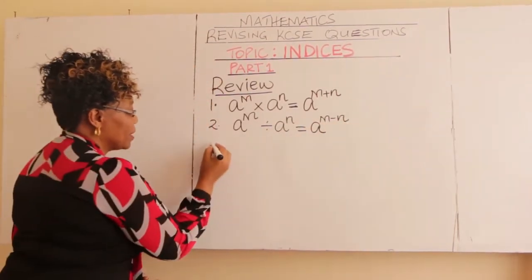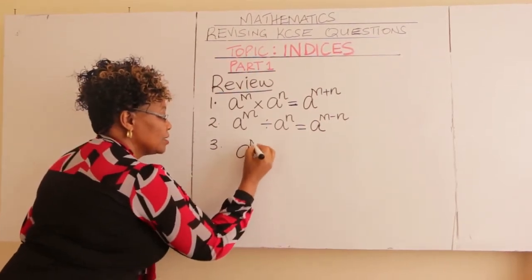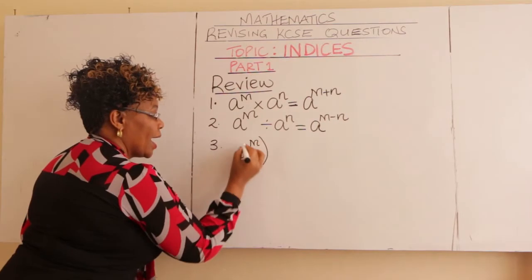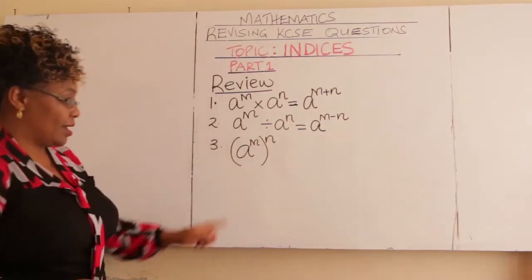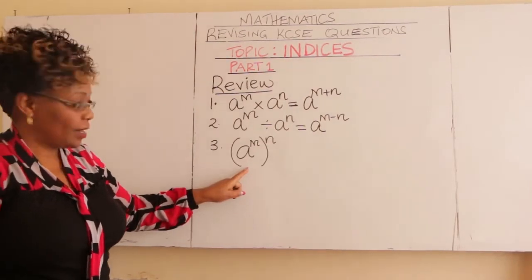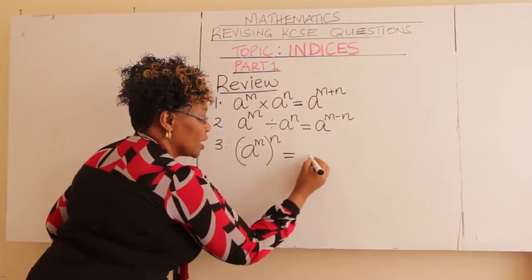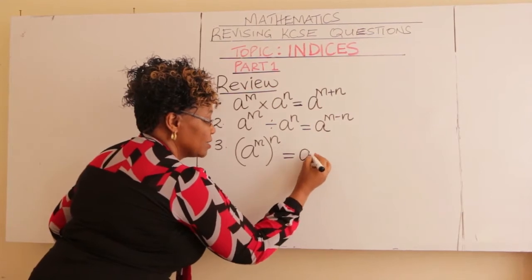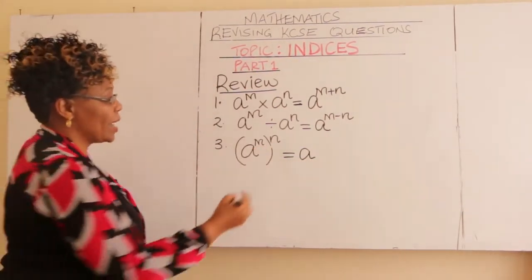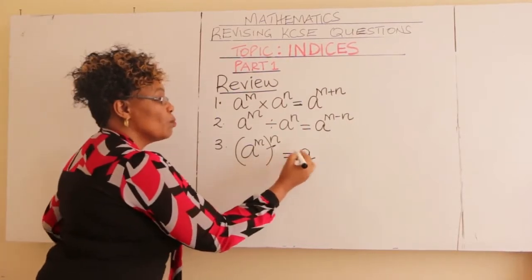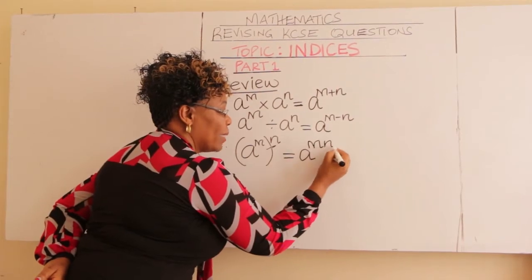Number three: if you have A raised to M and then it is raised to power N, this gives us — the base is A — and what do you do with these two powers? You multiply. M times N gives you MN.